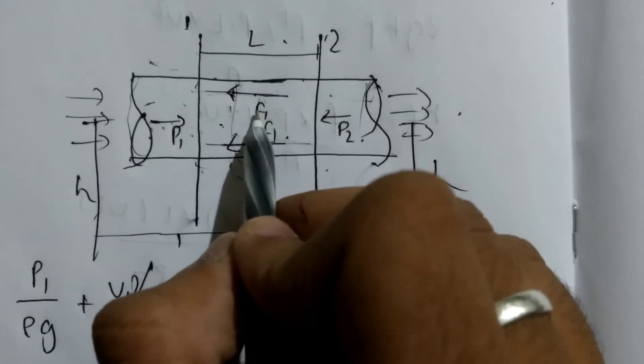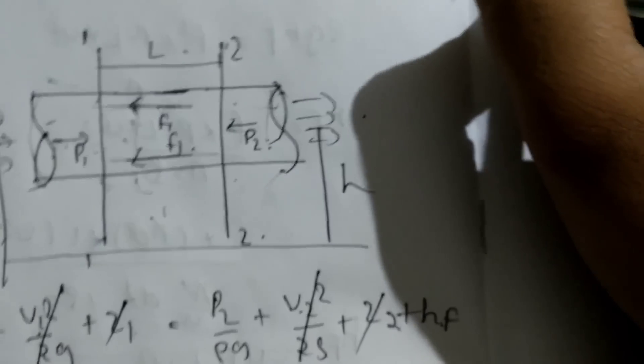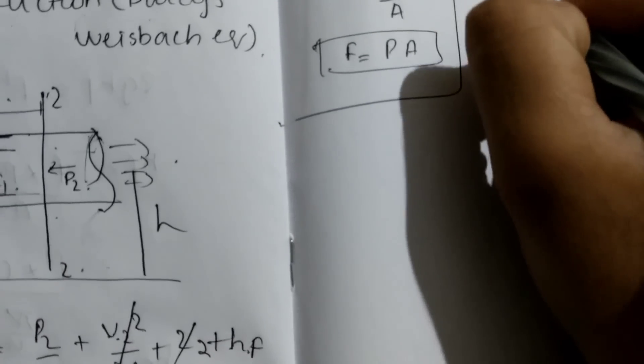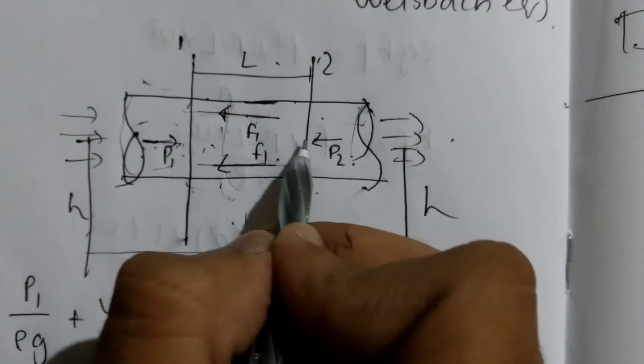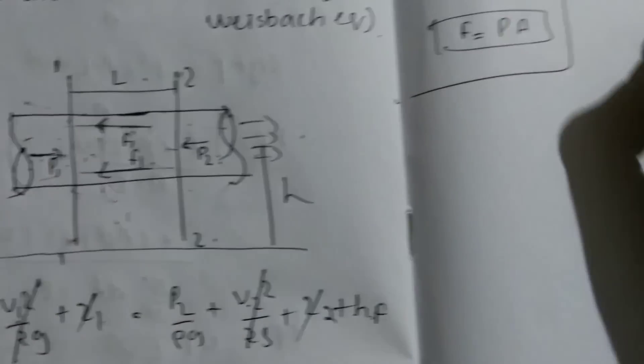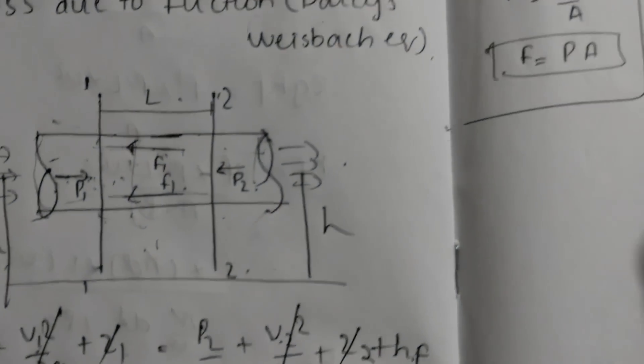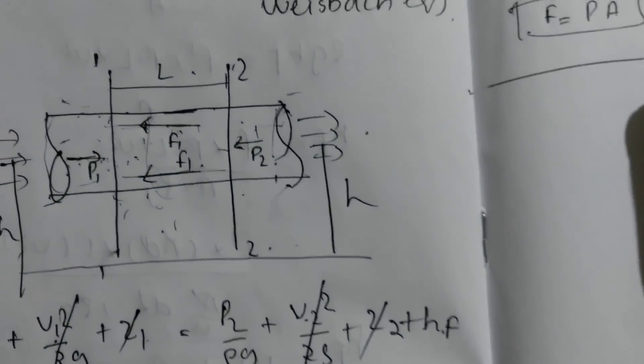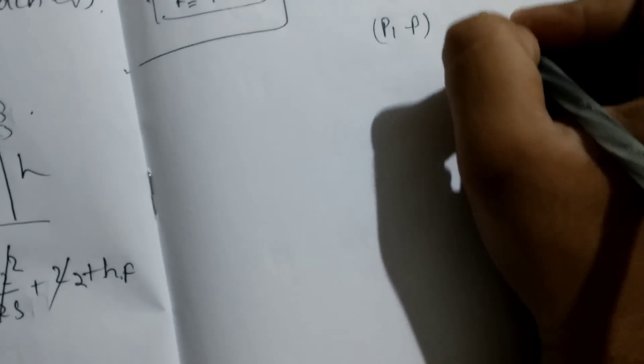P1 is acting to the right and must equal the sum of P2 and F1. Since pressure equals force divided by area, force equals pressure times area. So the force balance is: P1·A − P2·A − F1 = 0. Since A1 = A2 = A for a uniform cross-section pipe, we get P1 − P2 = F1 / A.